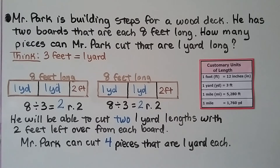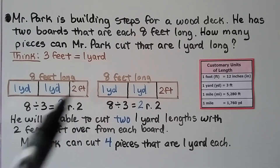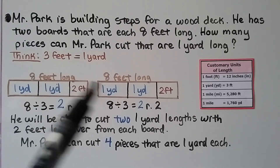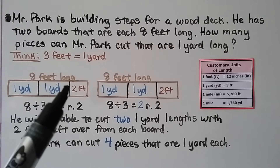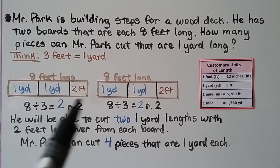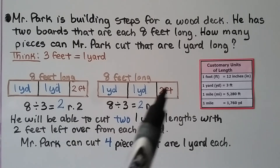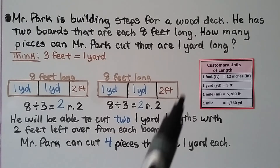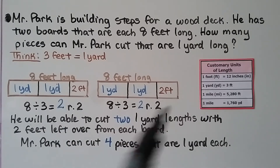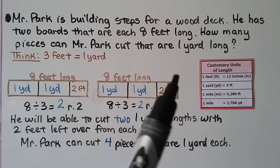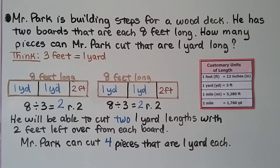Notice we didn't combine the boards and do 8 plus 8 equals 16, because that wouldn't work. He has a 2-foot leftover piece from each board, and 1 yard is 3 feet — he can't fit those leftover pieces together to make a full yard. So he can only get 2 one-yard pieces from each board.